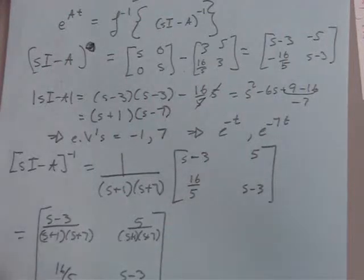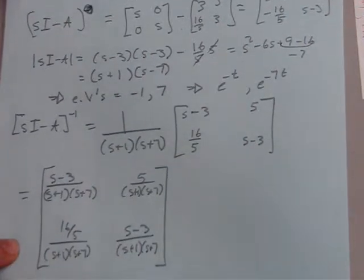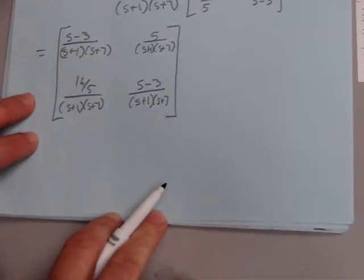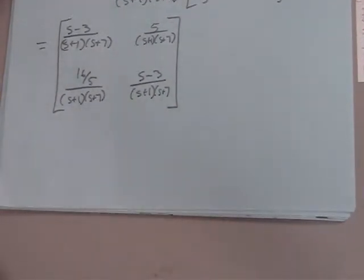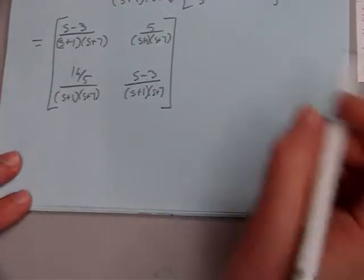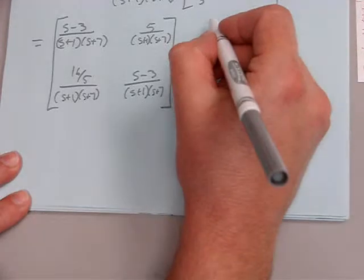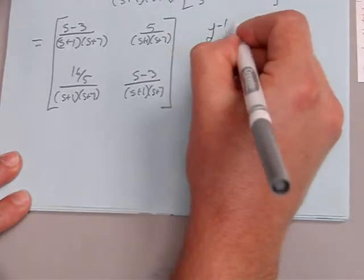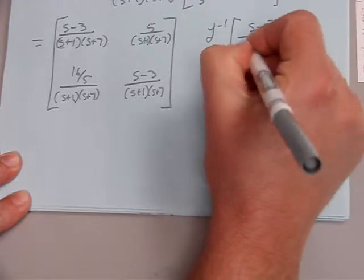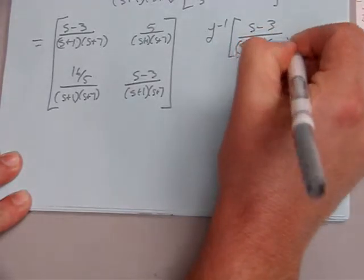Okay, now what we want to do is take the inverse Laplace transform of this, and we'll do that term by term. So let's look at inverse Laplace transform of s minus 3 over s plus 1, s plus 7.